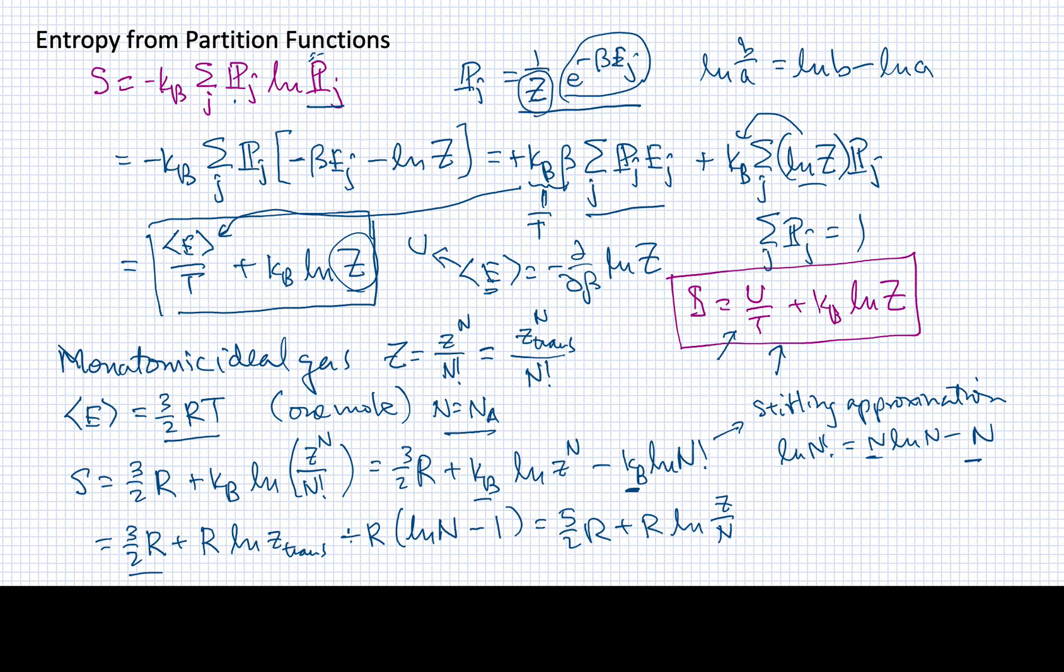If you remember what our translational partition function was for a molecule, we can plug that directly in. This is equal to five halves R plus R times log, and the translational partition function was 2 pi m KB T over h squared raised to the three halves power times the volume.